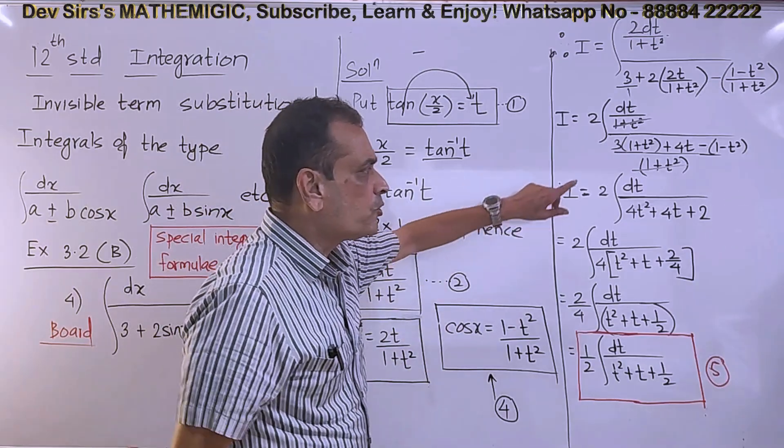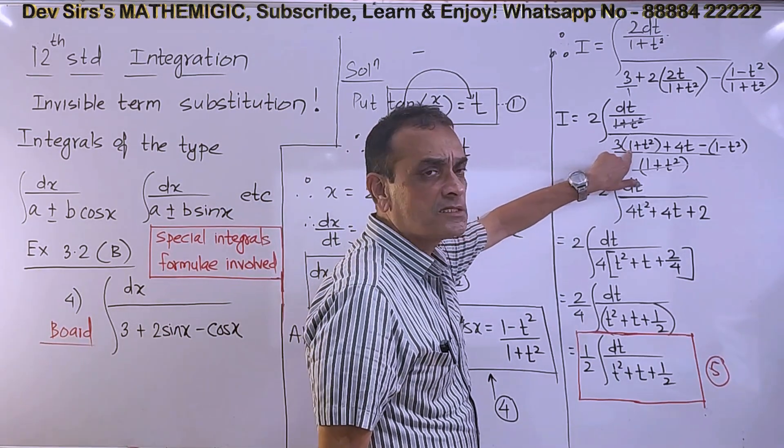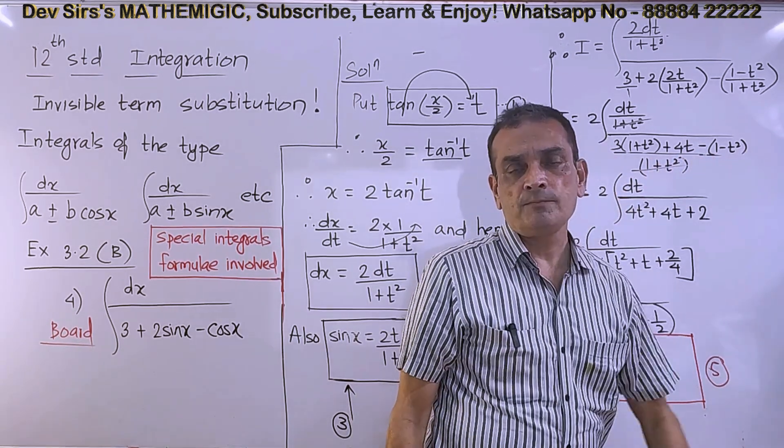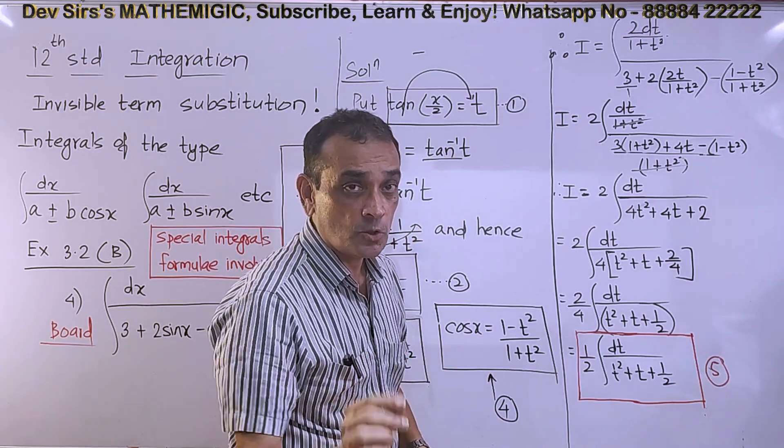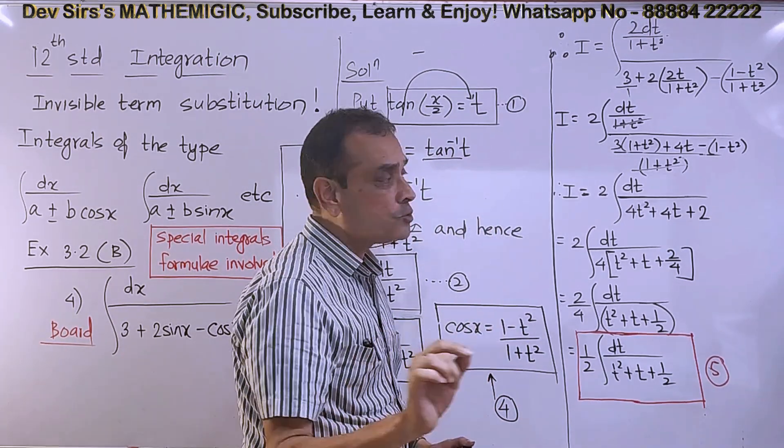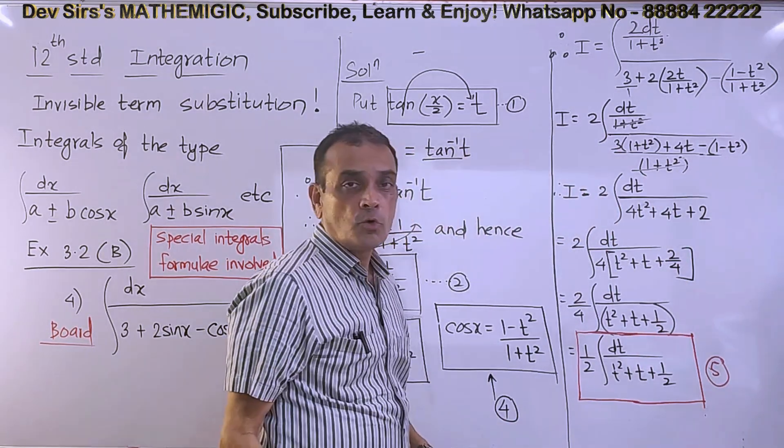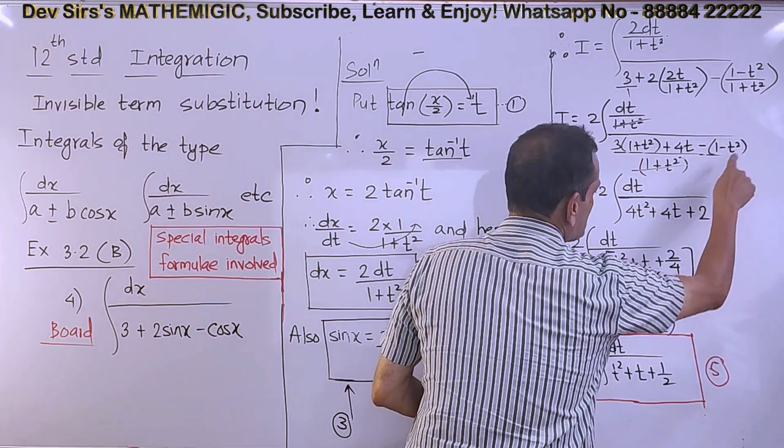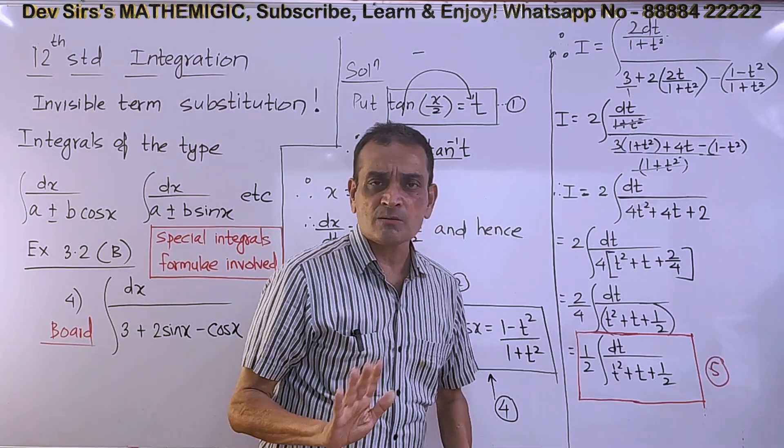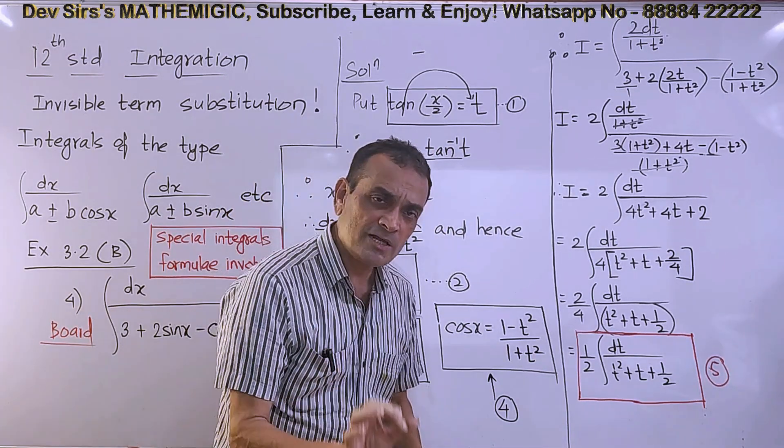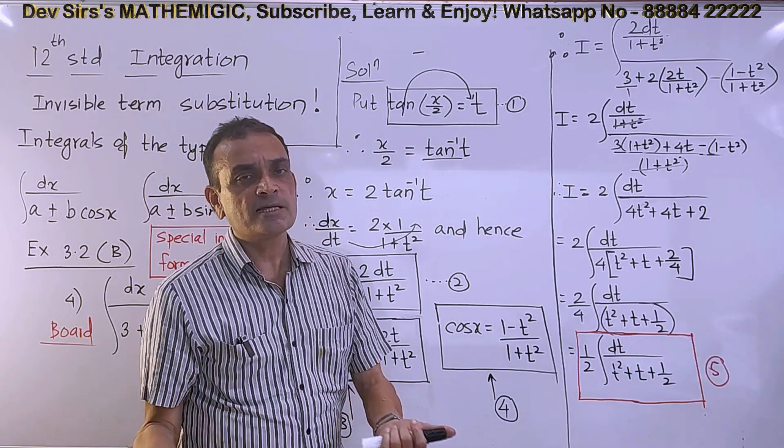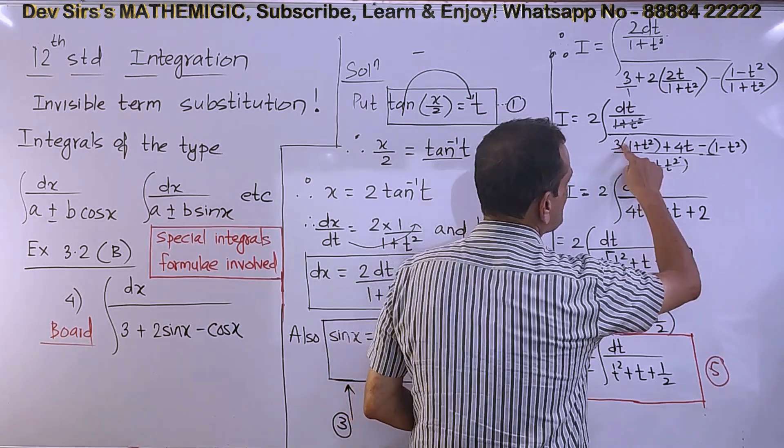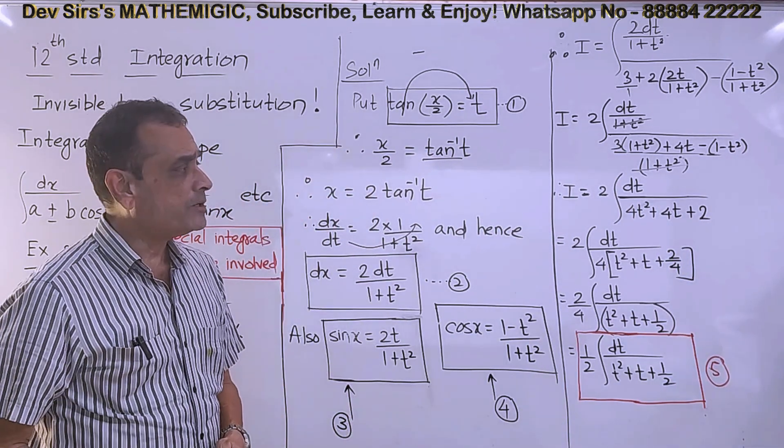After canceling, if you open up the brackets: 3 times 1 is 3, plus 3t², plus 4t, minus 1, plus t². Add all terms together - practice this yourself. Expand this so that you get this result. After simplifying, you get 4t² + 4t + 2.